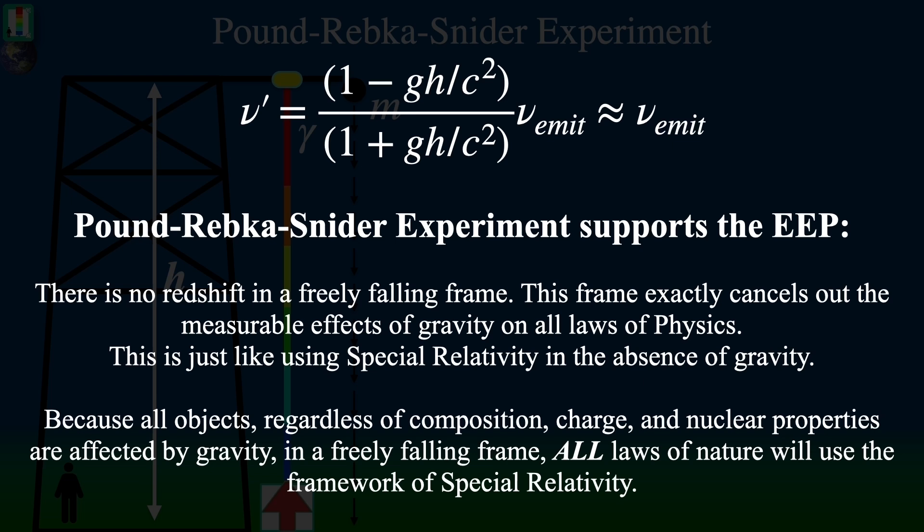Nu-tick is equal to some fraction times nu-emit. This fraction is essentially a gravitational blue shift divided by a gravitational red shift. But this ratio is so small that it's practically, for all intents and purposes, one. Therefore, the frequency observed at the top of the tower is the same as if it were the one emitted, so long as you're measuring inside of a freely falling accelerated reference frame.